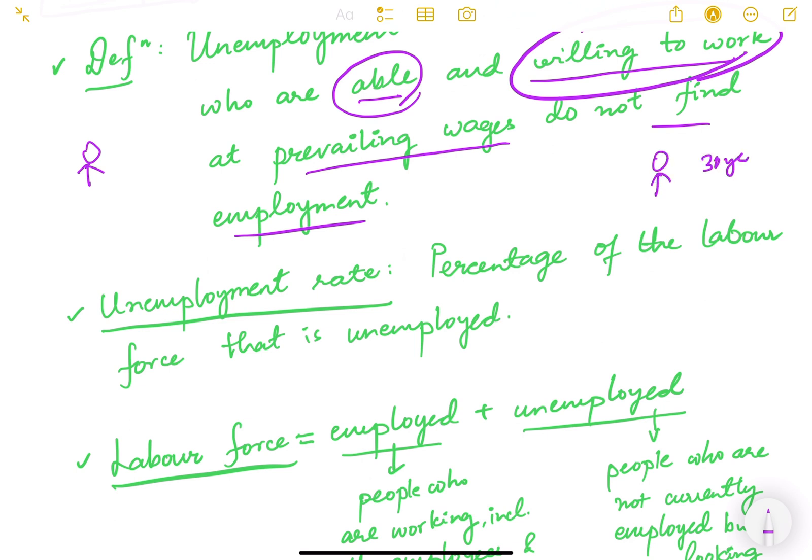There may be a person in working age — say a 30-year-old man who can work in a factory — but he is not currently looking for a job and is not willing to work, maybe because he is pursuing higher studies or some other cause. Such a person will not be counted as unemployed because he is not willing to work and is not participating in the labor force.